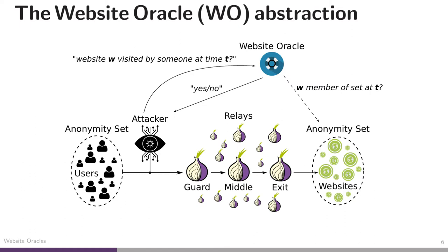We're talking about a particular time frame — typically in our paper on the order of milliseconds or hundreds of milliseconds, but could also be seconds. And it's for a particular website, but it could be for anyone from the Tor network visiting that website. One way to look at what the website oracle does is that it performs a membership query on the destination anonymity set of all possible websites visited at a particular point in time by anyone from Tor.